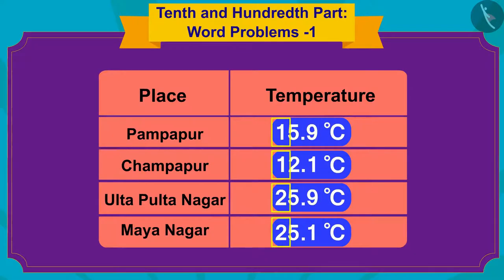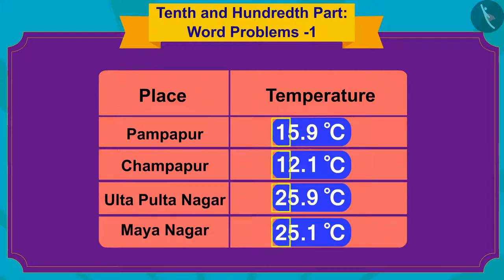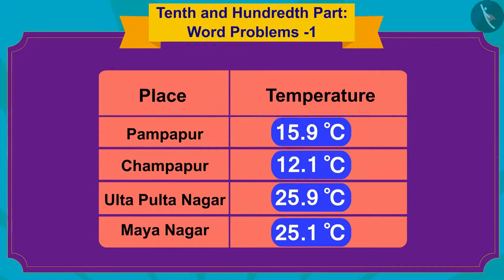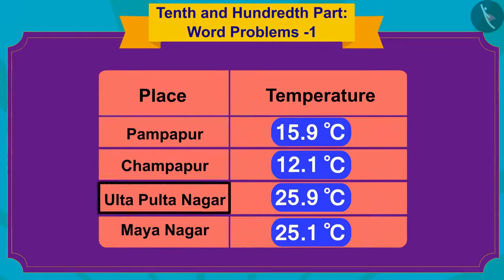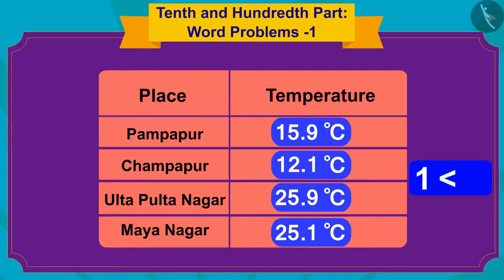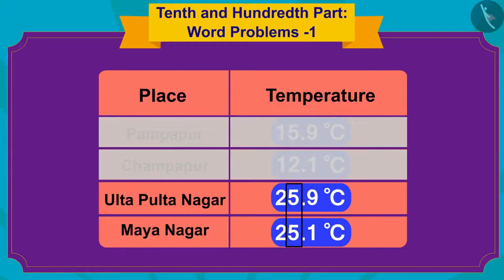First we will compare the numbers written in the 10th place of all these temperatures and write them down. The temperatures of Champapur and Pampapur have 1 in the 10th place, and those for Ulta Pulta Nagar and Mayanagar have 2 in the 10th place. Since 1 is lesser than 2, we will now only compare the numbers in the units places of Ulta Pulta Nagar and Mayanagar to find the place with the highest temperature. The units place of temperatures in both places have the number 5.